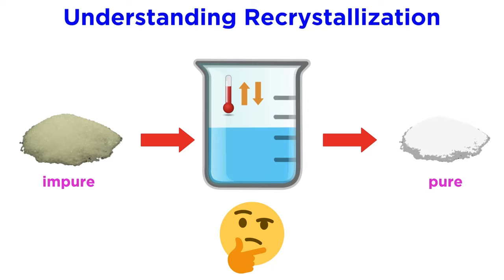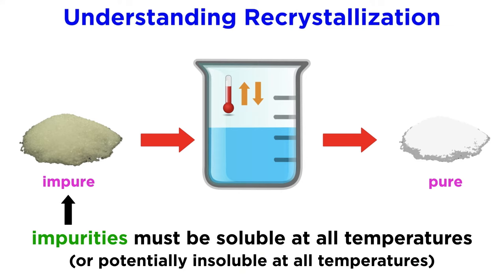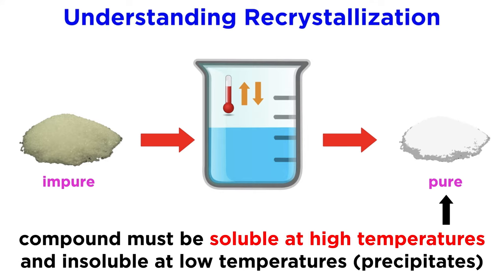Now choosing a suitable recrystallization solvent is the most important part of the experiment. We need our impurities to be soluble in our solvent at all temperatures. They must dissolve as we heat things up, and remain dissolved when we cool it back down. However, the product must only be soluble at high temperatures. It dissolves when we heat it up, but then precipitates again as we cool it back down.